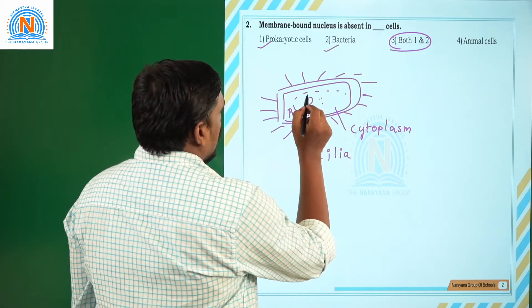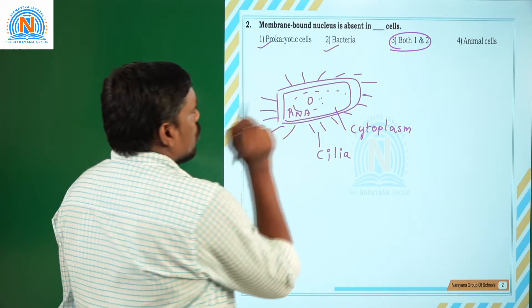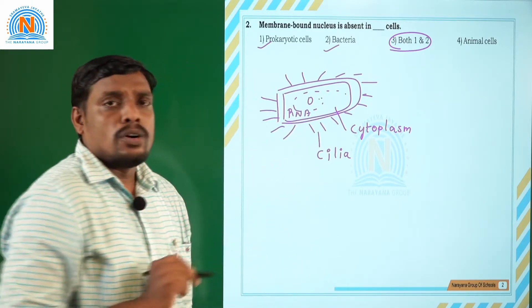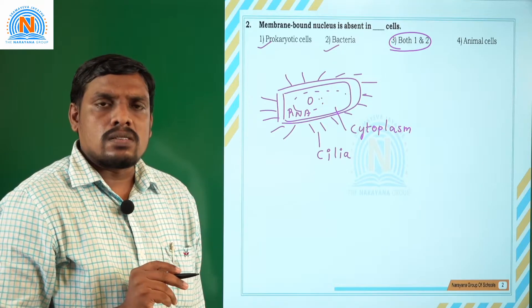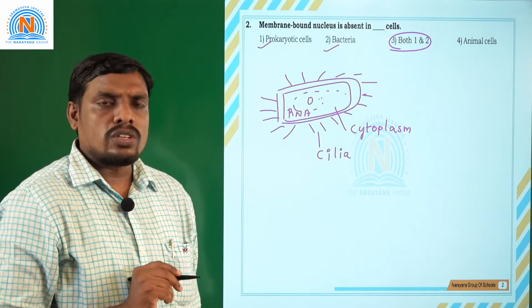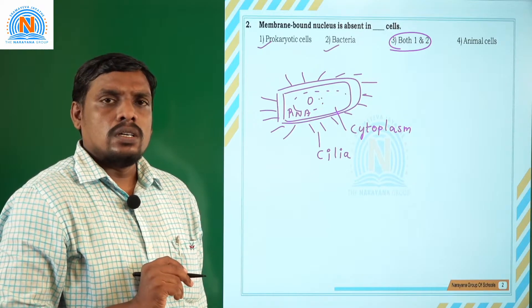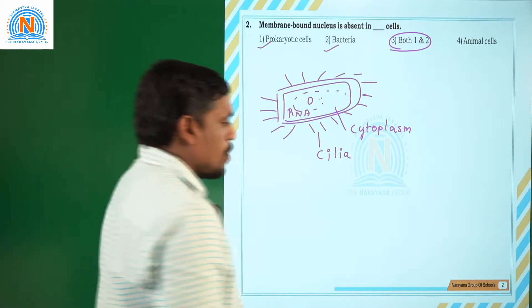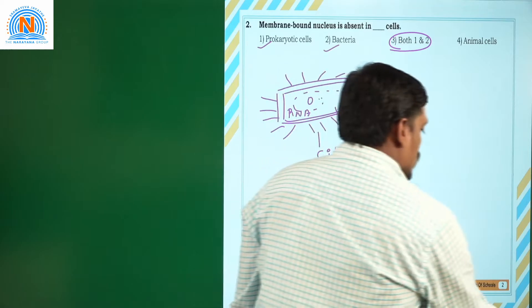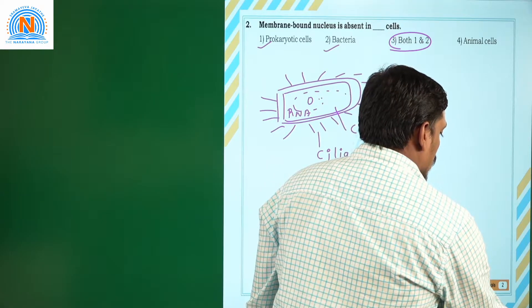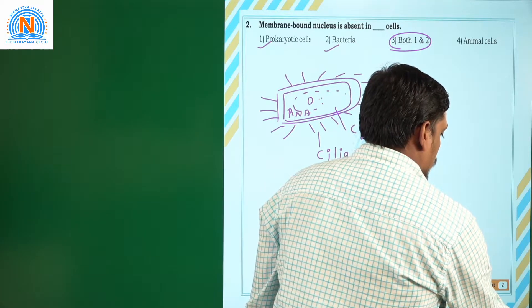That's why bacteria and other prokaryotic cells do not have a membrane-bound nucleus. So the answer is both 1 and 2.